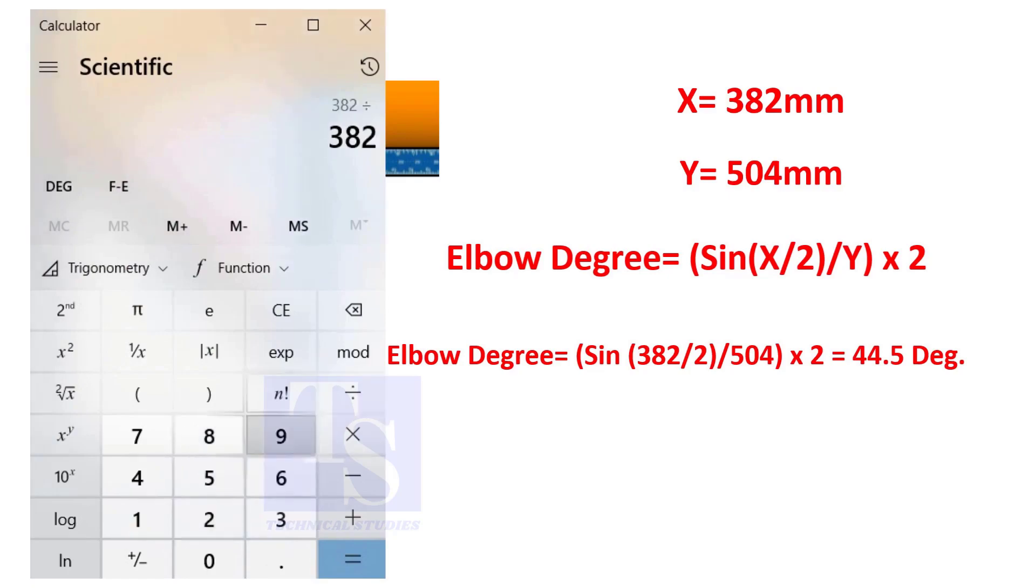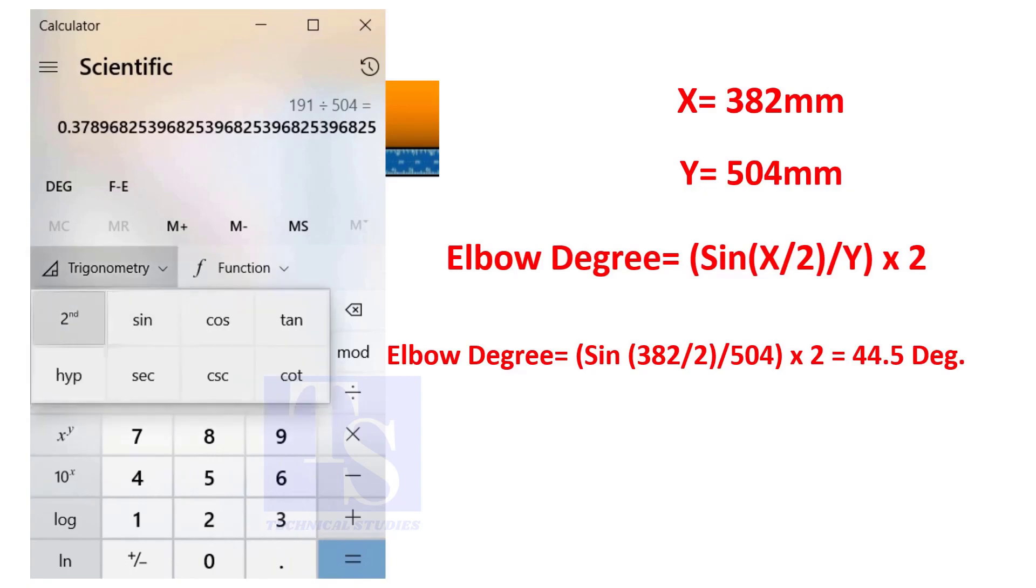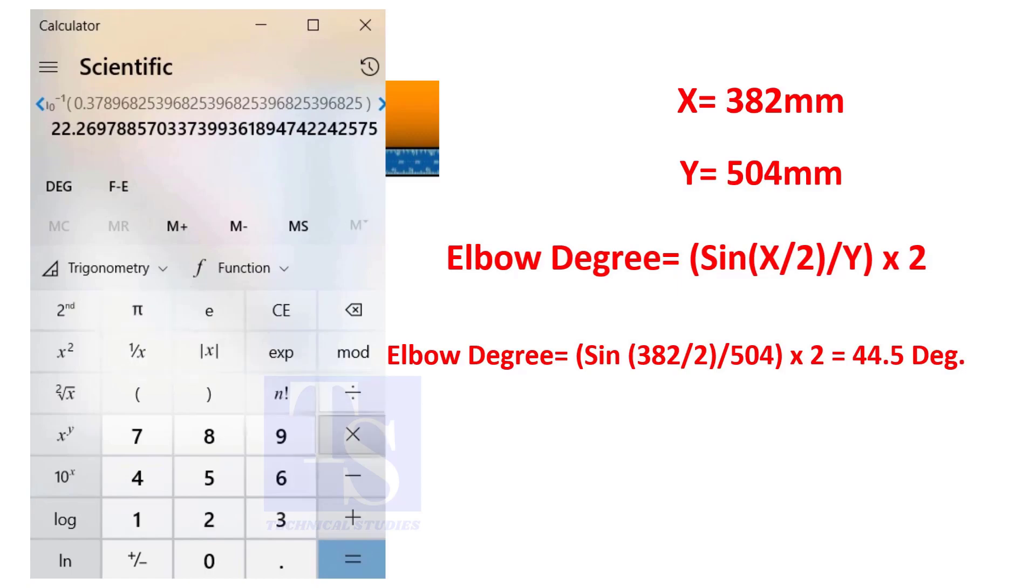You can try this method on pipe spools to measure the distortion due to the welding. So, the degree of the elbow is 44.5.